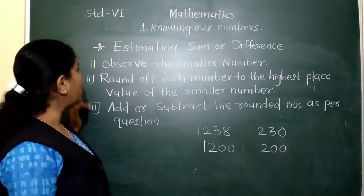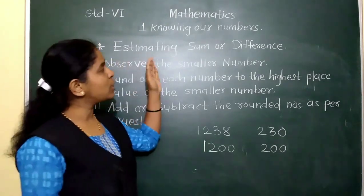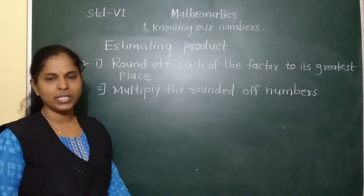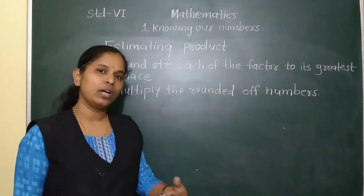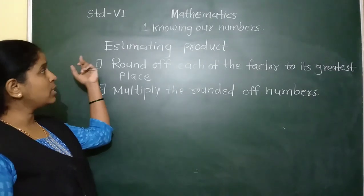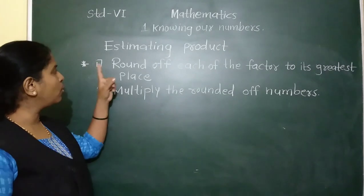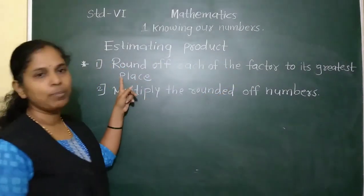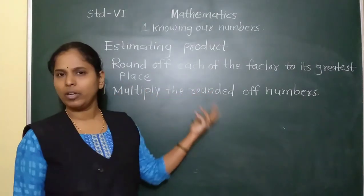By using these three rules, we can estimate the sum or difference of given numbers. Next is estimating product. For that also, rules are there. First rule: round off each of the factors to its greatest place. Second rule: multiply the rounded off numbers.